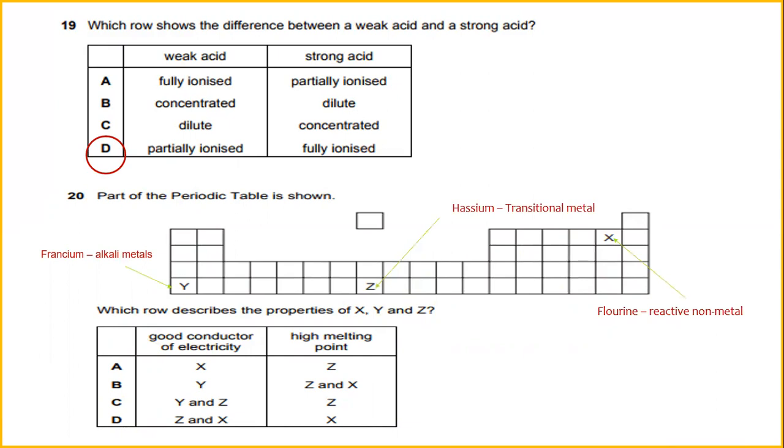So the answer for this would be C. Good conductor of electricity will be alkaline metal, which is francium. And Z is hassium, which is transitional metal. And high melting point will be Z, hassium, transitional metal.